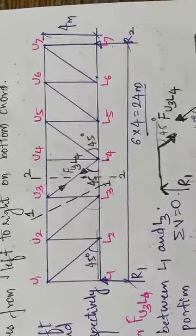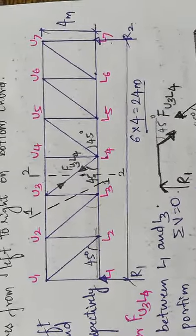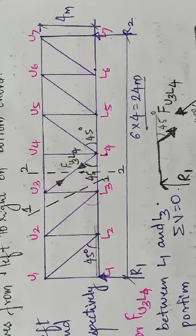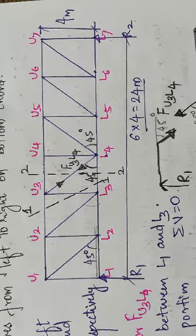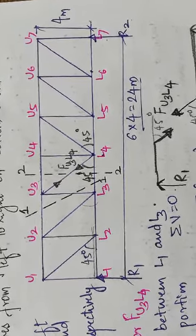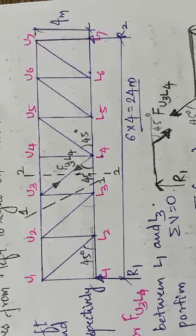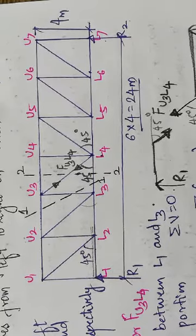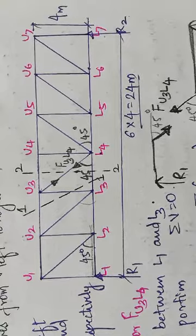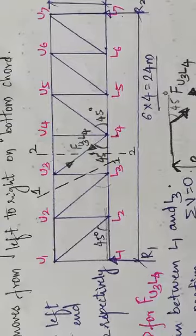The height and inclination of the frame are given. In this problem we will calculate the forces for an inclined member u3u4, and then for u3l4 and u3l3, covering a horizontal member, an inclined member, and a vertical member — all three kinds of forces.